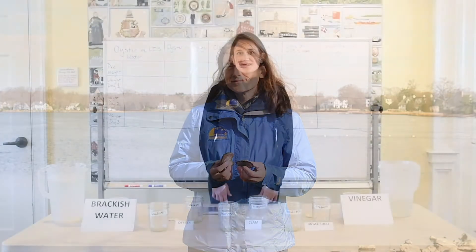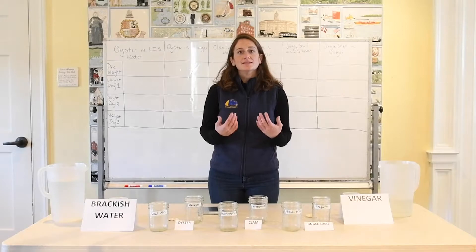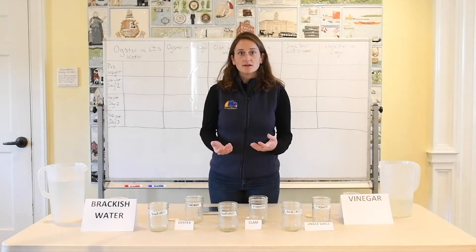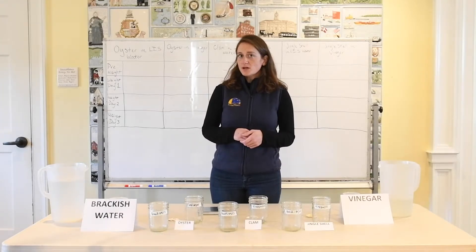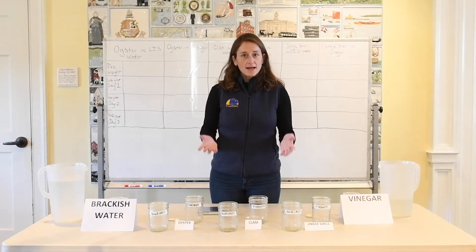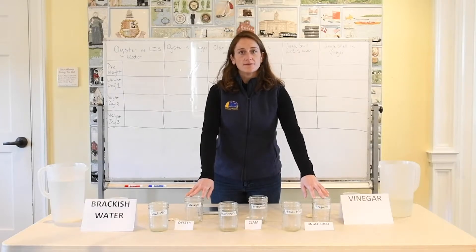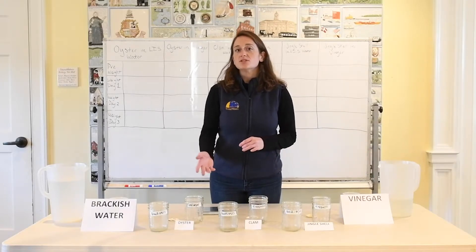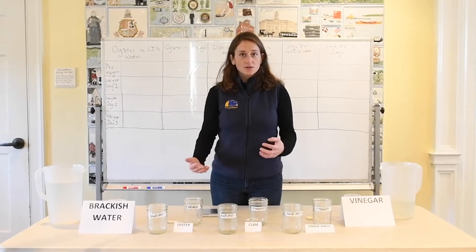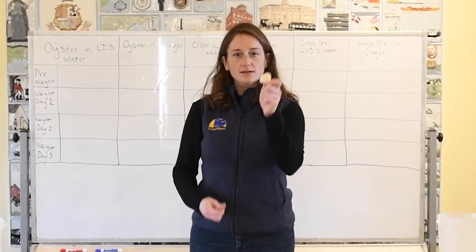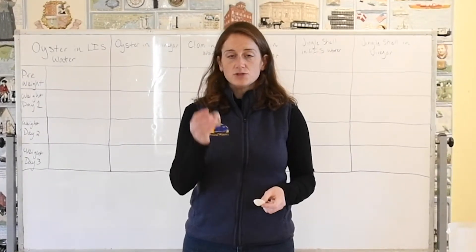To explore this notion a little bit more, we're going to set up an experiment to see how an acidic solution can affect three different types of shells. To do that, we need to gather all of our supplies — and if you'd like to follow along, you can find the instructions in your supporting materials packet. I have six mason jars, each labeled with the condition — either brackish water or vinegar — as well as which type of shell I'm putting into that jar. I have two jingle shells, two clam shells, and two oyster shells.